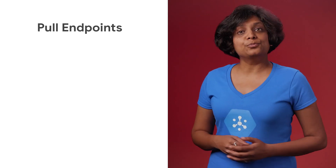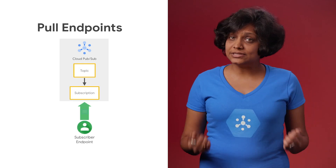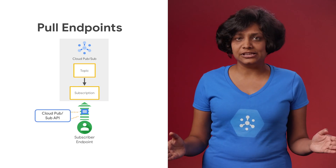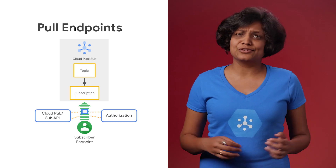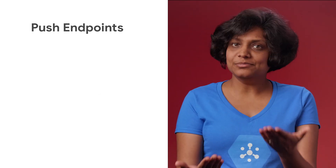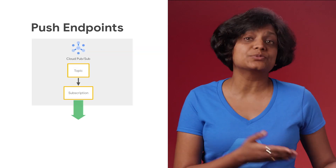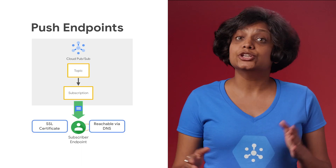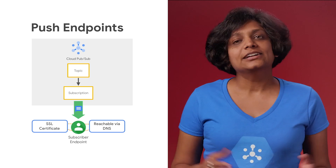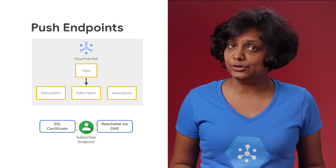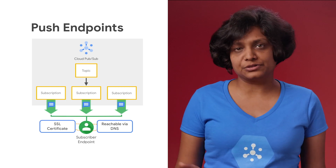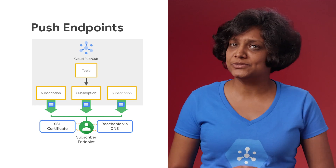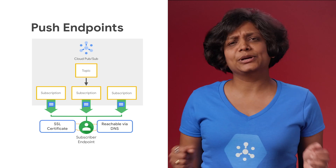What kind of endpoints are needed for push versus pull? In the pull mechanism, because the subscriber is pulling messages from Cloud PubSub via the API, any device on the internet that has authorized credentials to call the API can serve as a pull endpoint. In the case of push mechanism, the message is being pushed by Cloud PubSub to the subscriber endpoint, so the endpoint must be reachable via DNS name and have a non-self-signed SSL certificate installed. The benefit of push subscriptions is that they are largely decoupled from PubSub — they don't need credentials or the PubSub client library, just application logic that knows how to parse a PubSub POST request body. It's a very lightweight integration model.